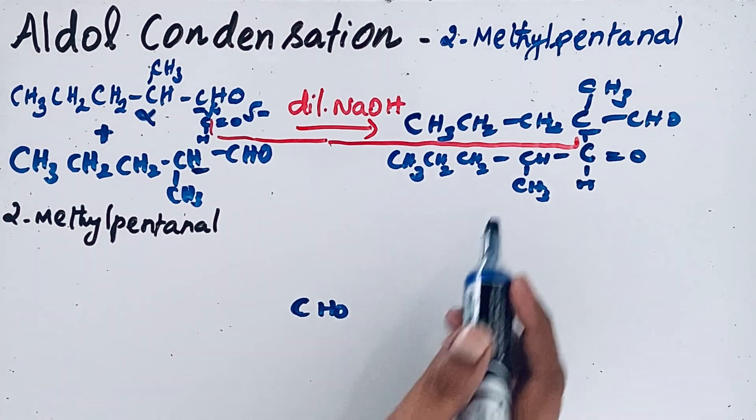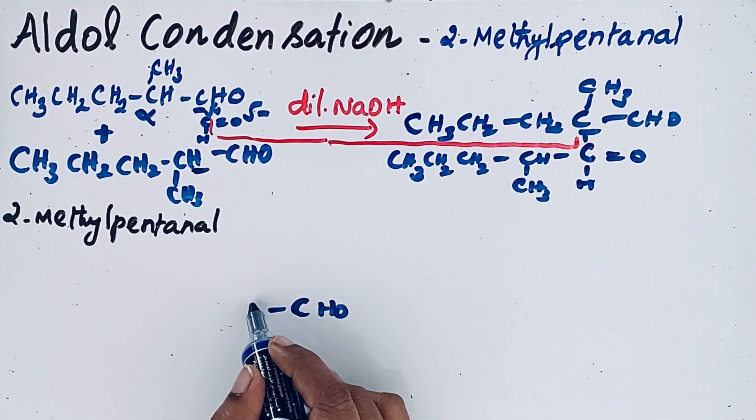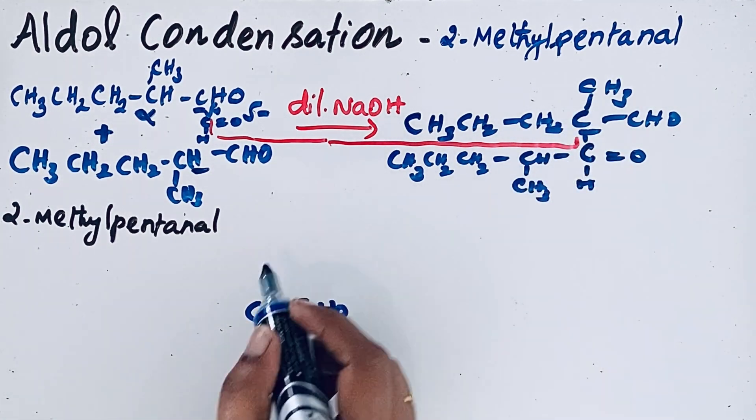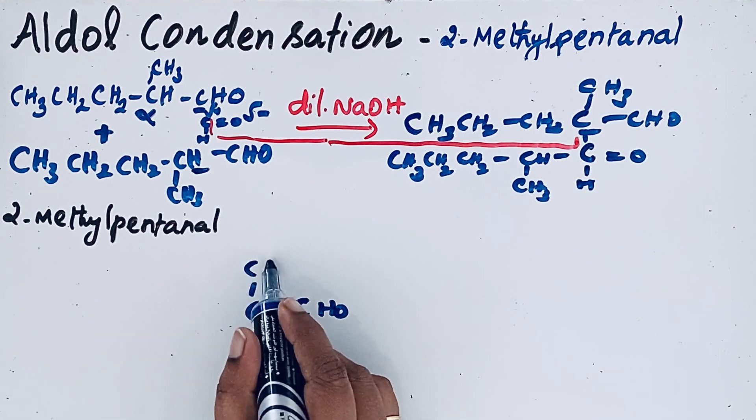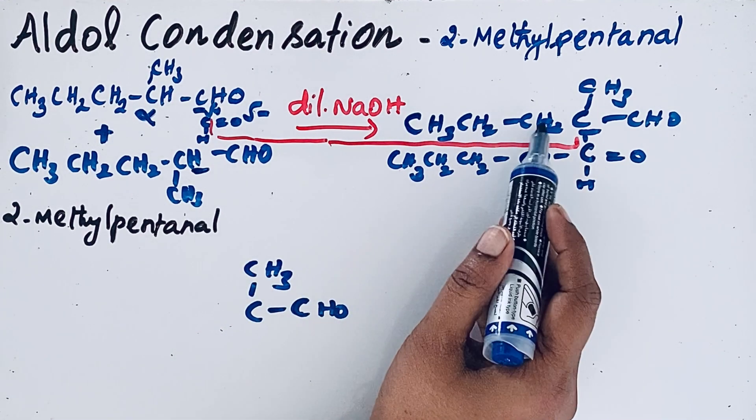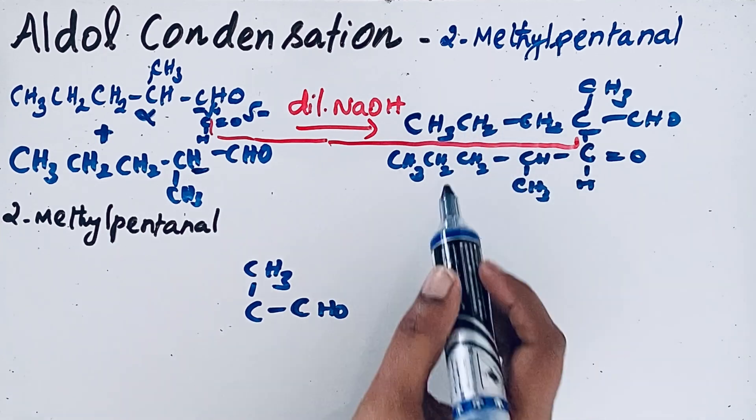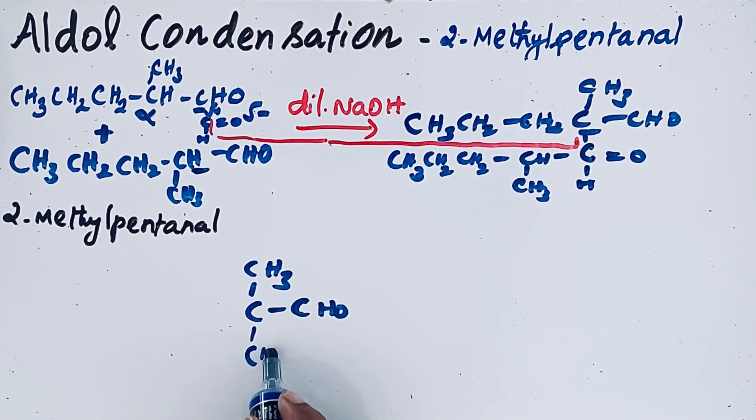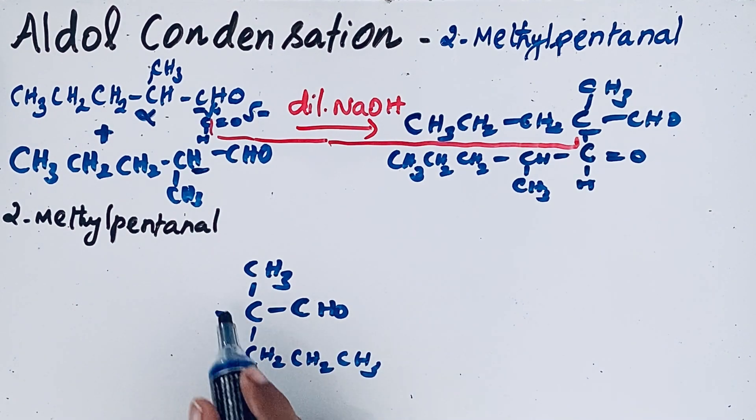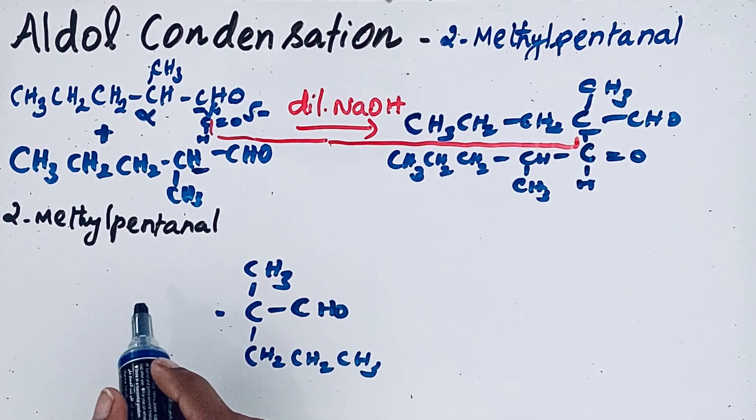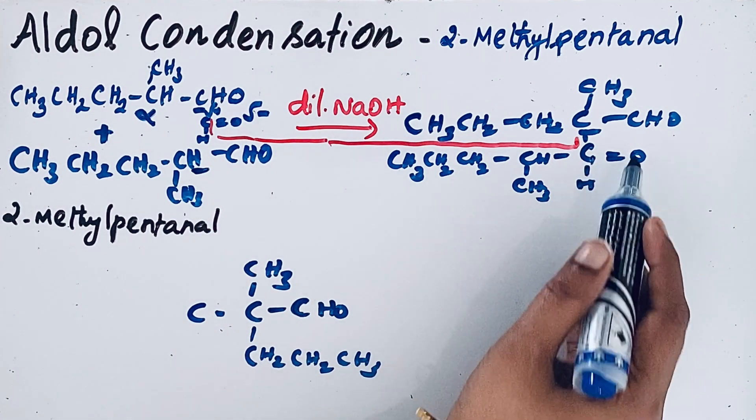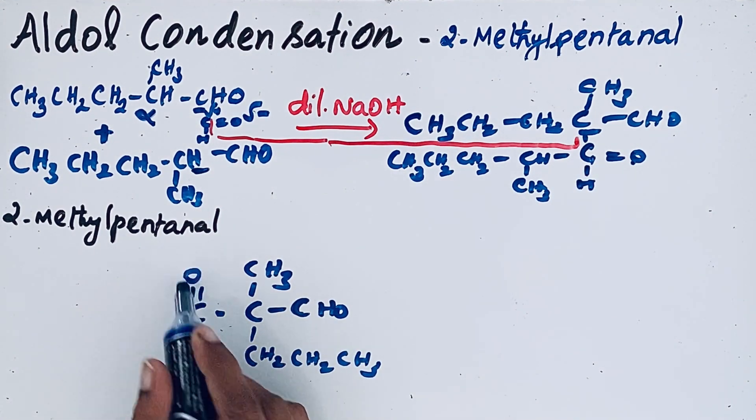CHO. Then after that, C. Then methyl group is attached here, CH3. And then here 1, 2, 3, propyl group is in the same carbon. So CH2-CH2-CH3. Then after that, again come to this carbon, which is attached to one double bond OH.